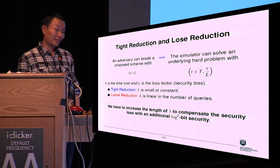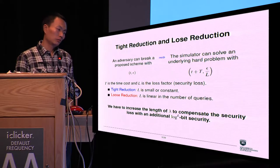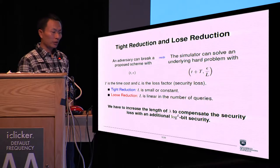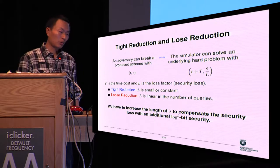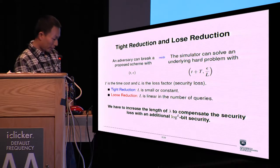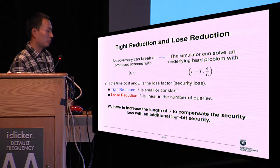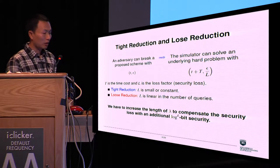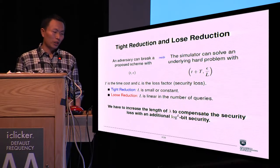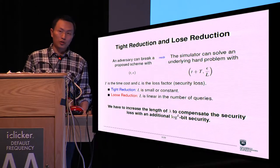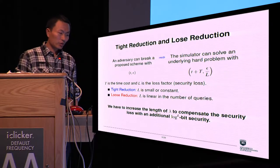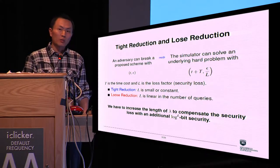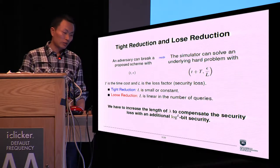In a security reduction, we use an adversary's attack on a proposed scheme to solve a computationally hard problem. We have a time cost denoted by T and a security loss or loss factor denoted by epsilon. A reduction is tight if epsilon is small or constant, and a reduction is loose if epsilon is linear in the number of queries, such as the hash queries or the signature queries. A loose reduction is not good enough because we have to increase the length of the security parameter to compensate for the security loss.